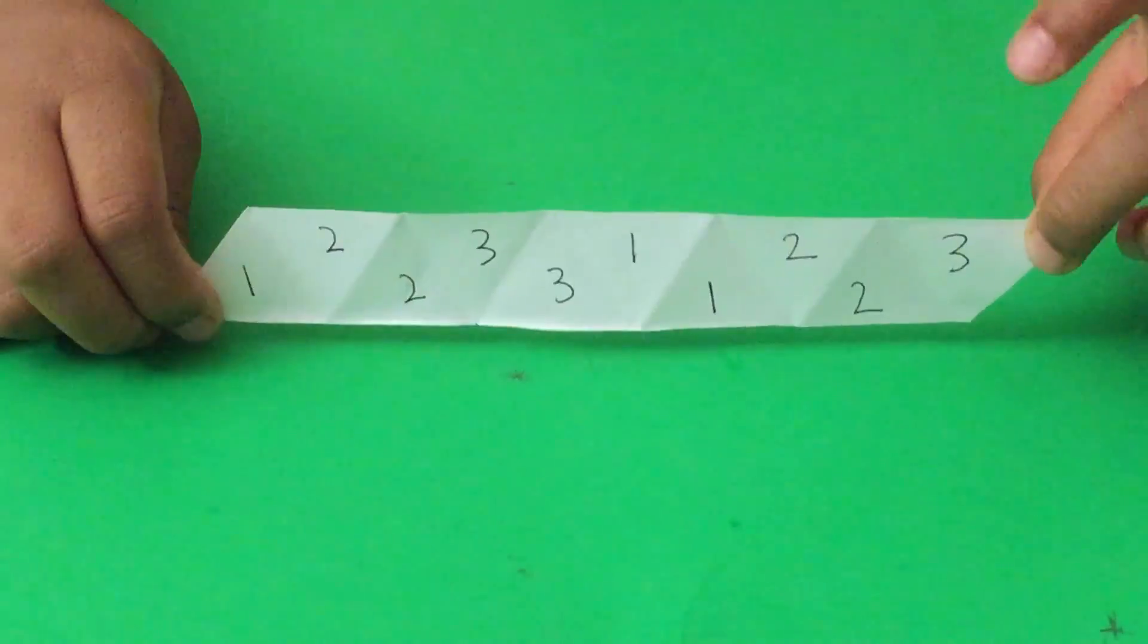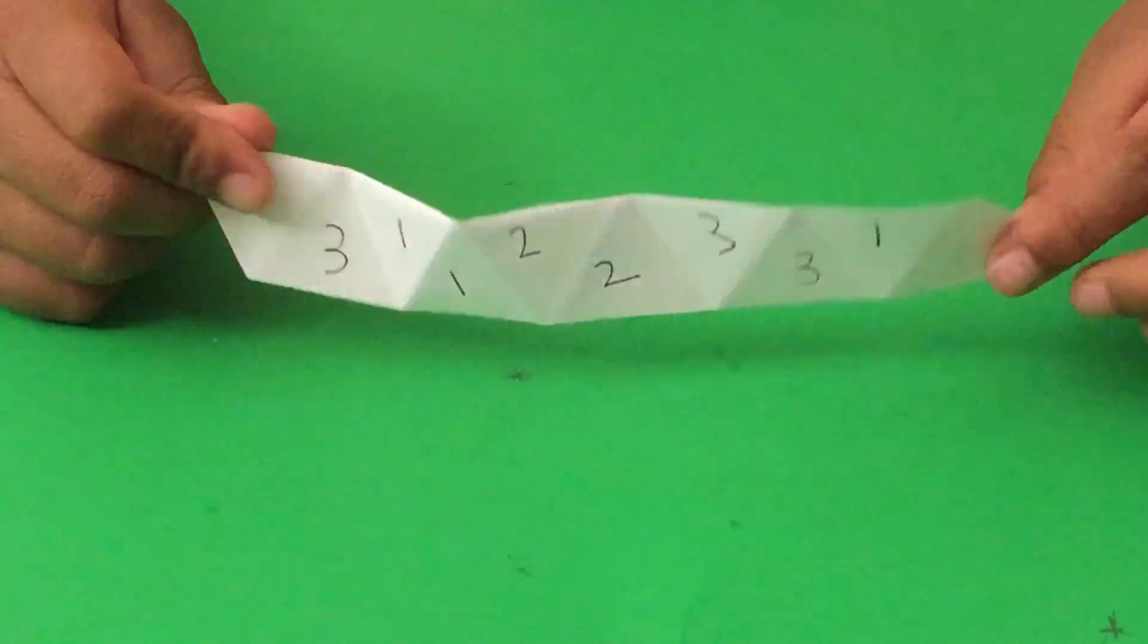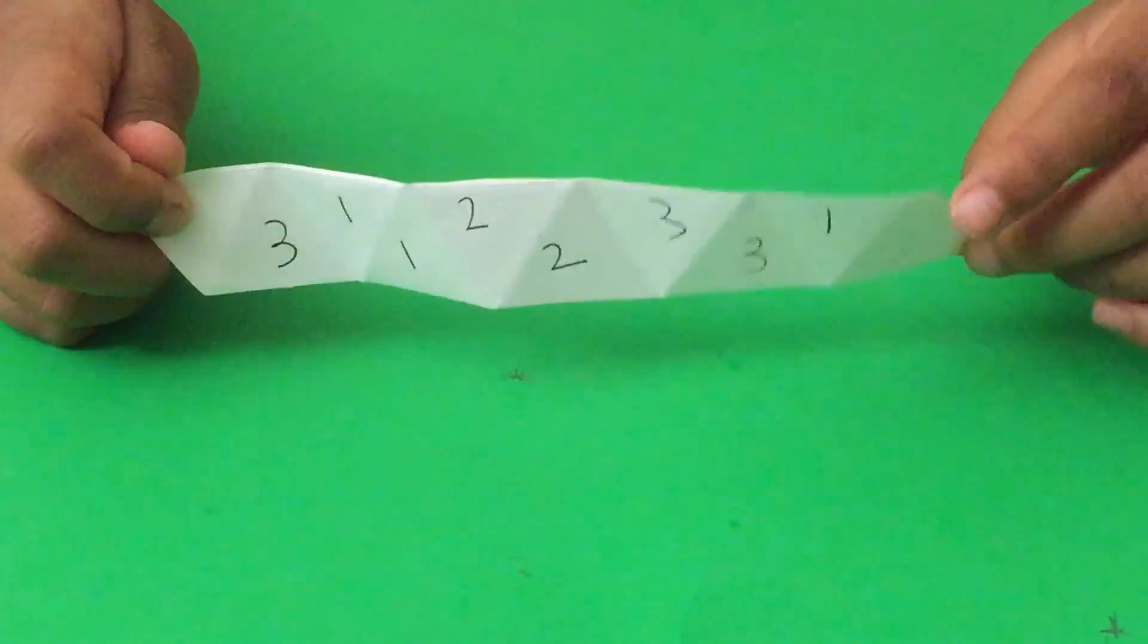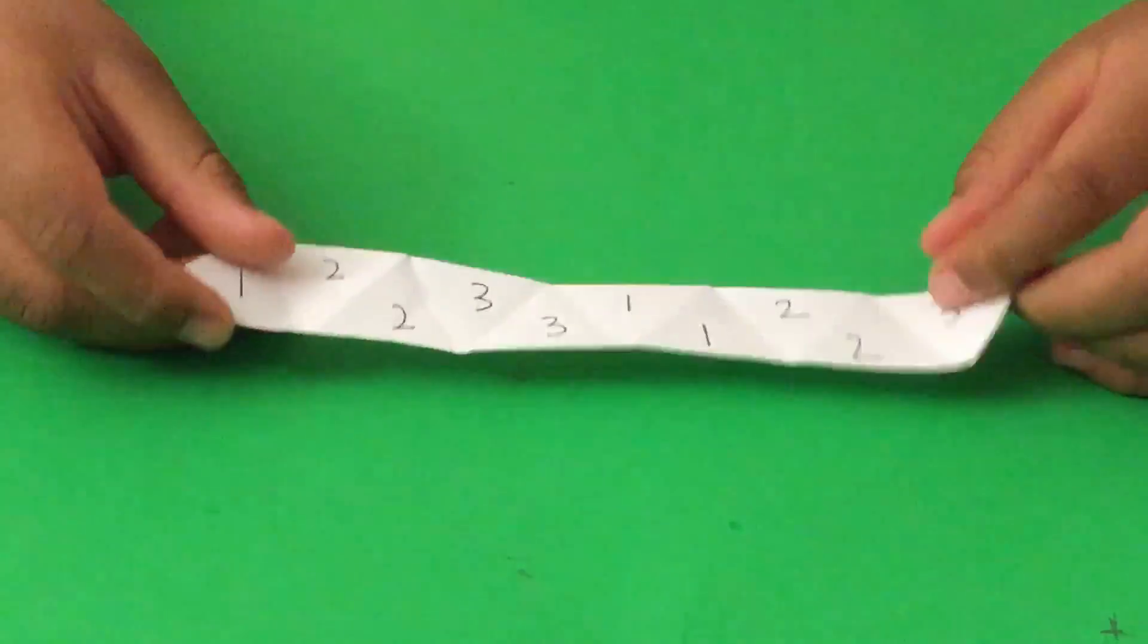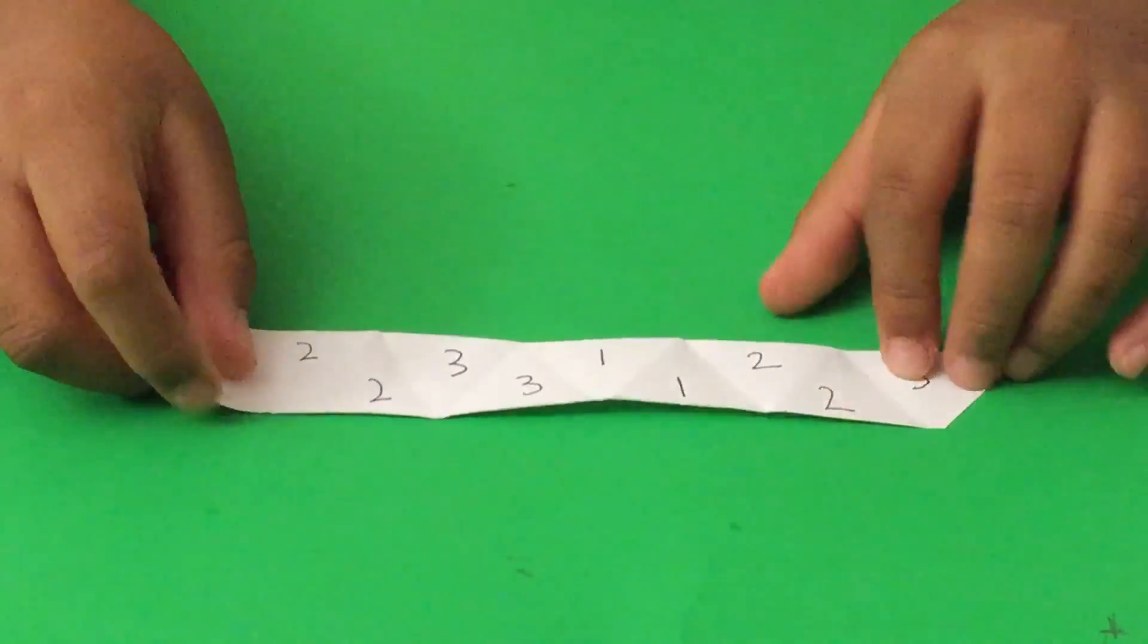The first side looks like this, and the second side looks like this. After you have numbered the second side, flip it over back to the first side.